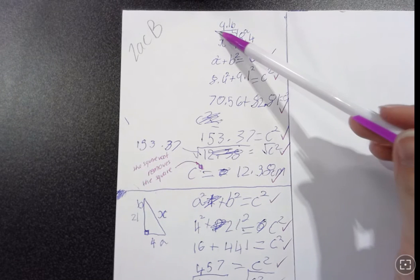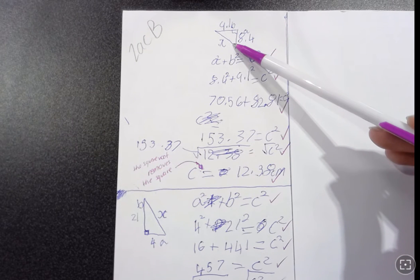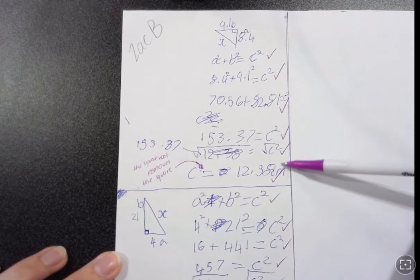All right, our first question looked at finding the long side of the hypotenuse. So that was the very first stuff that we did in Pythagoras. You've got all the correct rules, you've got all the correct working all the way down, well done.